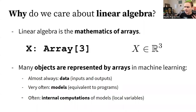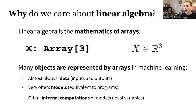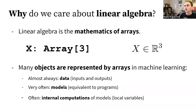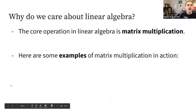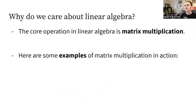In machine learning, our data will be in an array — our inputs and outputs. If our inputs are images, they'll be arrays of numbers representing that image. Our models — the equivalents of programs in machine learning — will be represented by arrays or collections of arrays, and even the internal computations of those models will be represented by arrays.